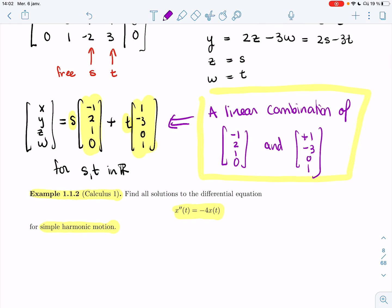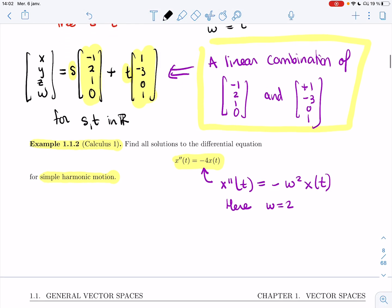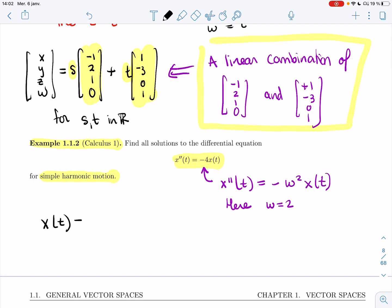You might not remember the details of solving it, but if you do remember, the general form from simple harmonic motion was something like this. In our case here, omega is 2. So the general solution was that x(t) equals a cosine(2t) plus b sine(2t).